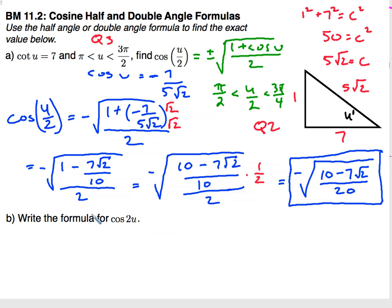Alright, part b asks us to write the formula for cosine of 2u, since we used the half angle here. I just want the formula for cosine. Now there are a couple of them, but we want the basic one.